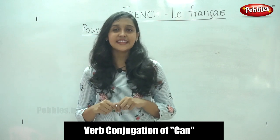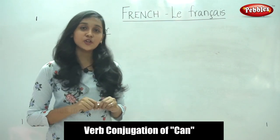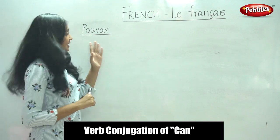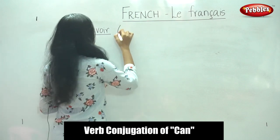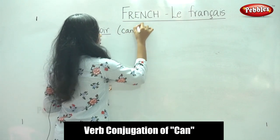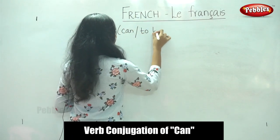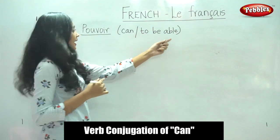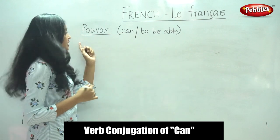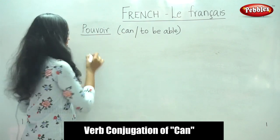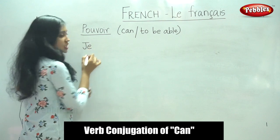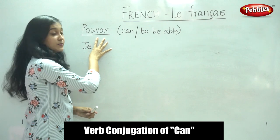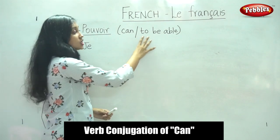Now, let us move on to the next verb. The next verb we are going to learn is POUVOIR. It is similar to VOULOIR. It means 'can' or 'to be able.'